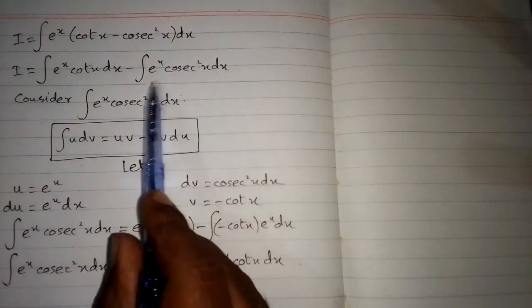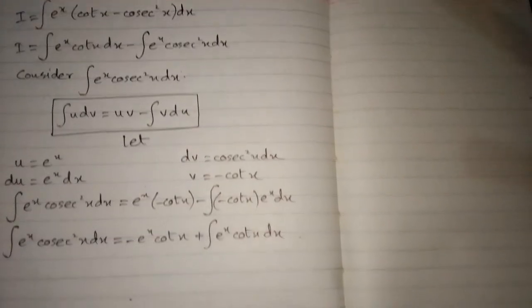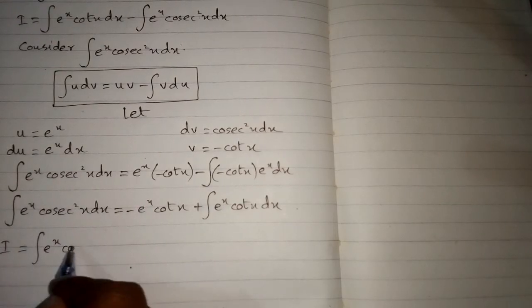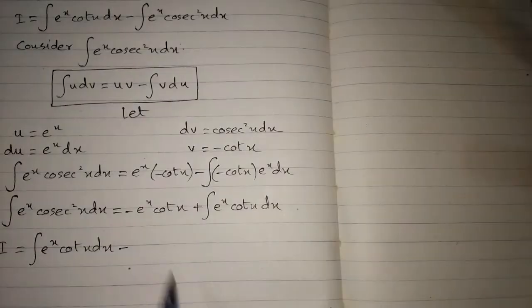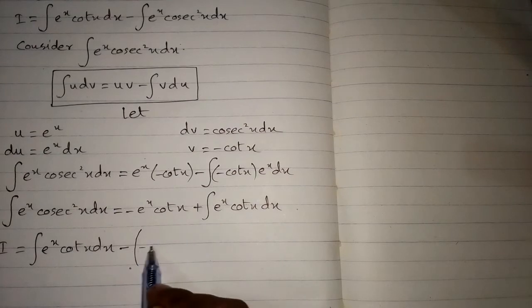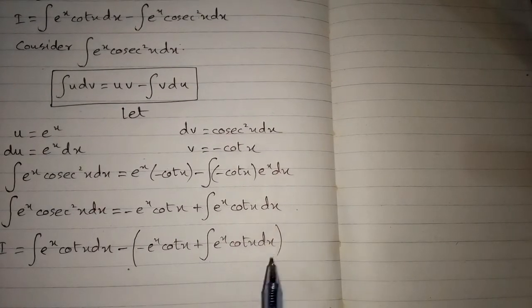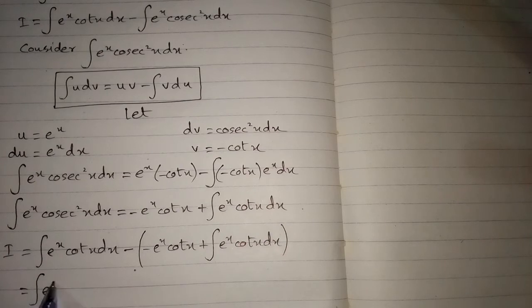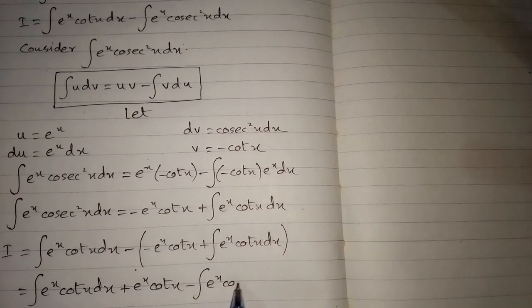We substitute this value back into the expression for i. So i equals integral of e to the power x cot x dx, minus the quantity: minus e to the power x cot x plus integral of e to the power x cot x dx. This gives us integral of e to the power x cot x minus integral of e to the power x cot x plus e to the power x cot x.